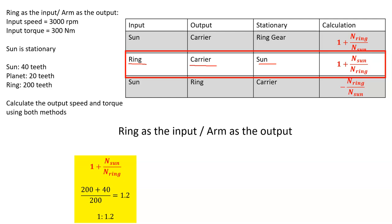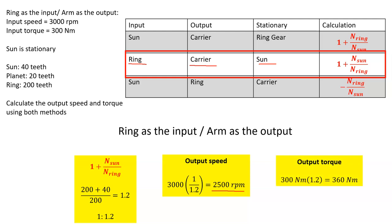From the velocity ratio of 1.2, the output speed is 3,000 / 1.2 = 2,500 rpm — exactly what we got using the tabular method. For the output torque: 300 Newton meters × 1.2 = 360 Newton meters. This shows the relationship between the tabular and algebraic methods. This is Professor Cummings — go ahead and like, comment, and share this video with somebody who might need it. I'll see you in the next video.